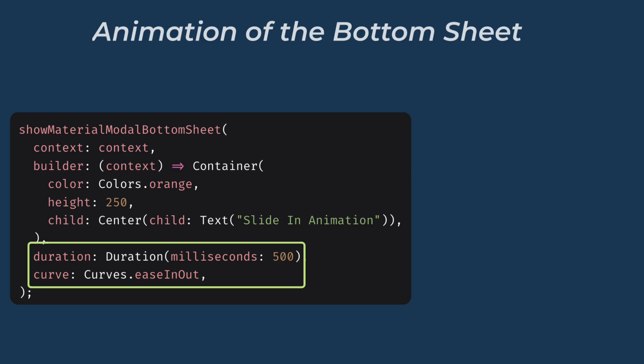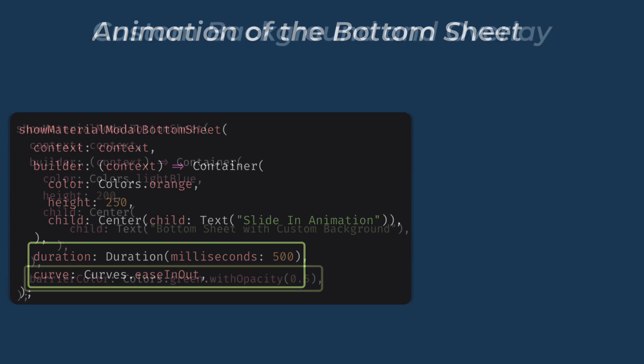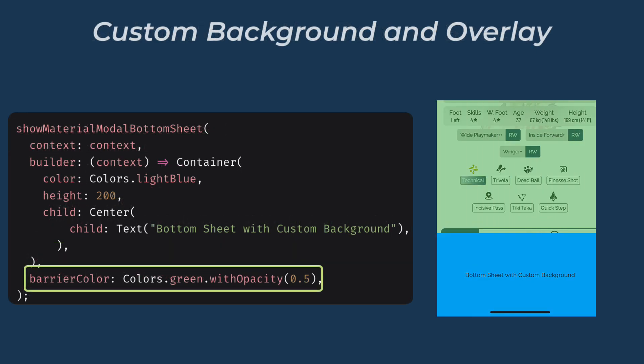The duration controls how long the animation takes, and the curve determines the speed pattern of the animation, like ease in, ease out, elastic, or anything. You can also add a custom background color or a custom overlay color. The barrier color controls the color and opacity of the overlay that appears behind the bottom sheet, enhancing the focus on the bottom sheet.